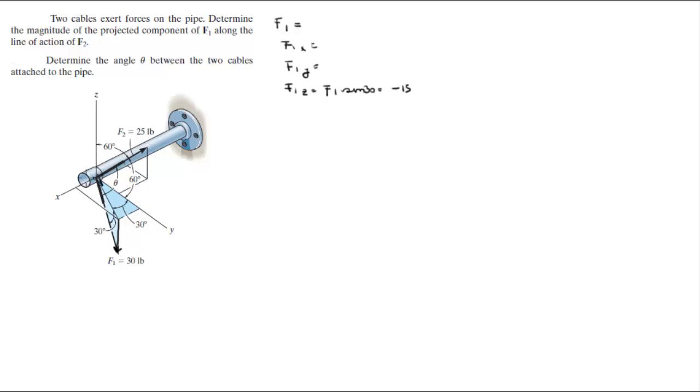We're going to find this projection right here. We're going to call it the projection of F1 onto the XY plane, because F1 is coming down and it projects at 30 degrees in the X and Y plane. We're going to need that projection to find the other two values. That projection is found by doing F1 cosine of 30, and it comes out to be 26.